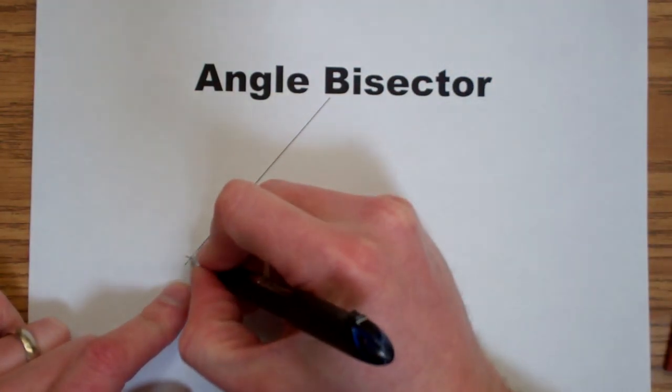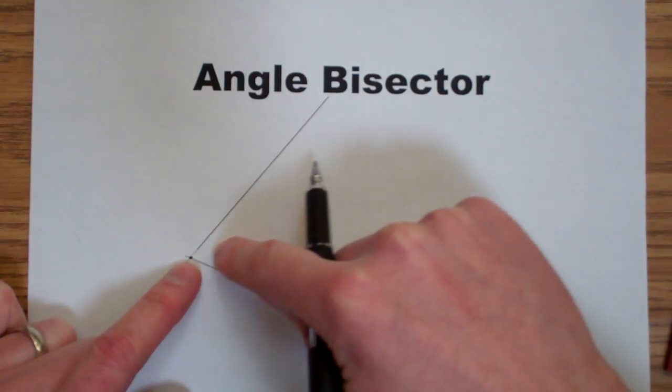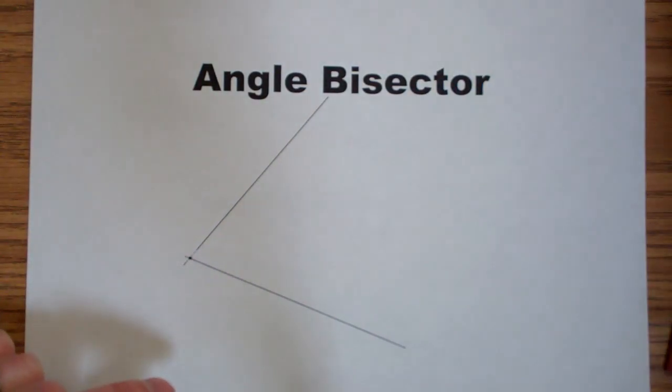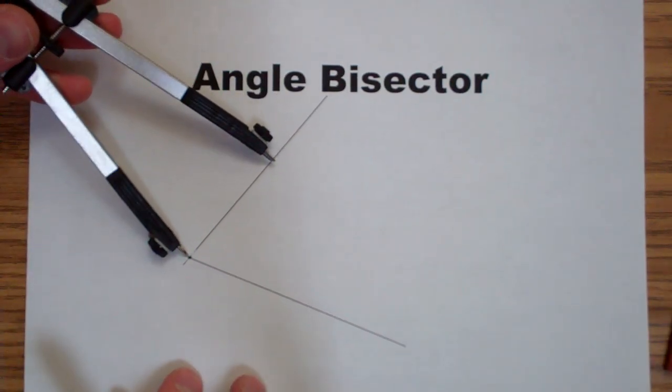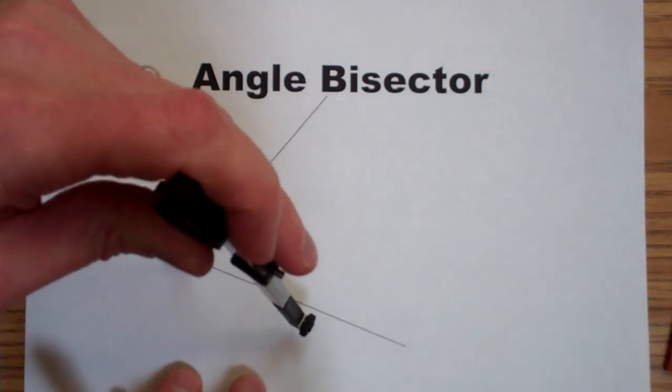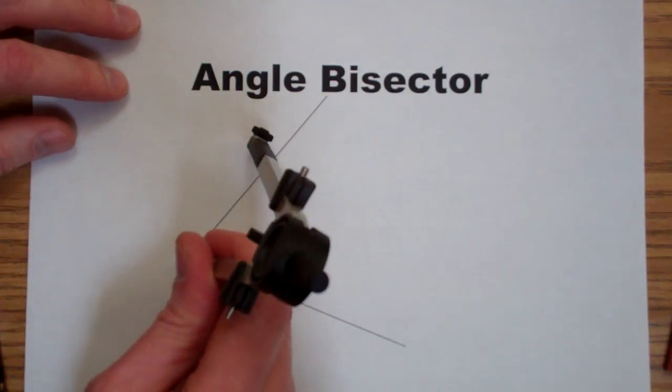So we know that it's going to go through the vertex and we need one more point to determine this line. To find this point we'll start by setting our compass so that it'll intersect both sides of the angle and then drawing that arc.